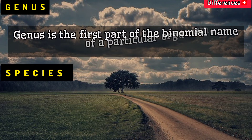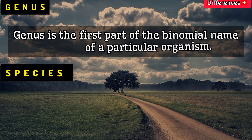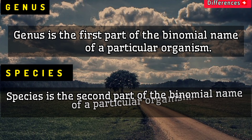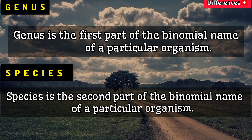Genus is the first part of the binomial name of a particular organism. Species is the second part of the binomial name of a particular organism.